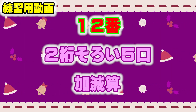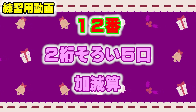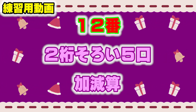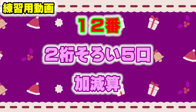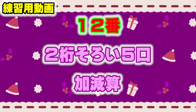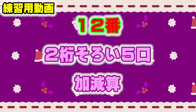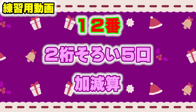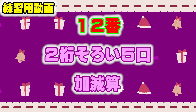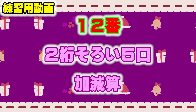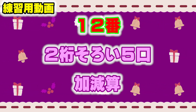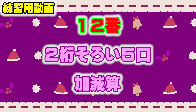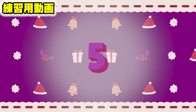問題12: 2桁揃い、極値、加減算の問題です。Start with 63,717, minus 840. 12番の回答欄に答えを書いてください。(Problem 12: uniform 2-digit, extreme value, addition and subtraction problem.)